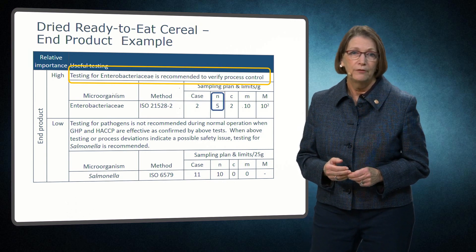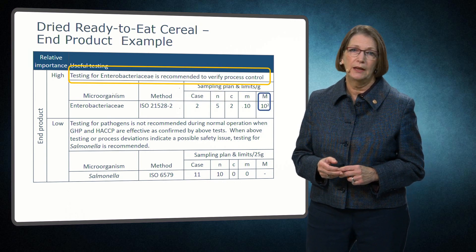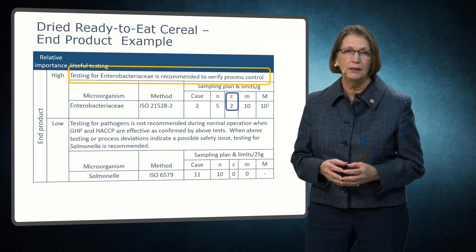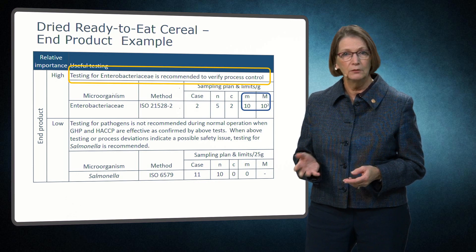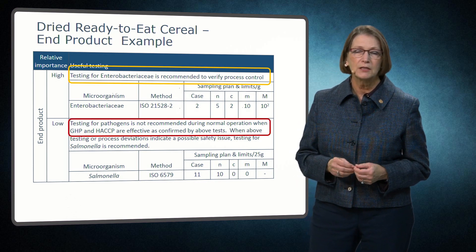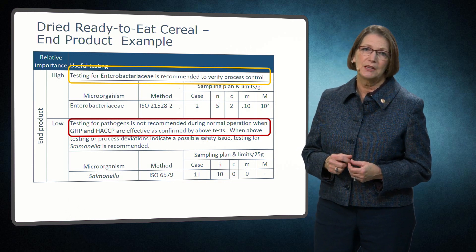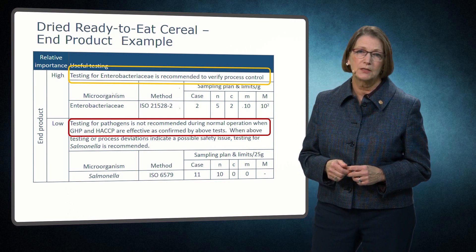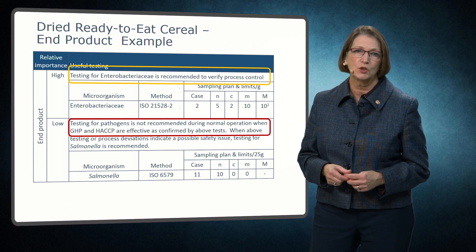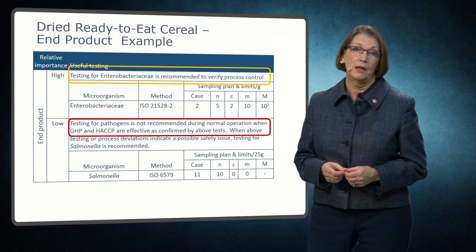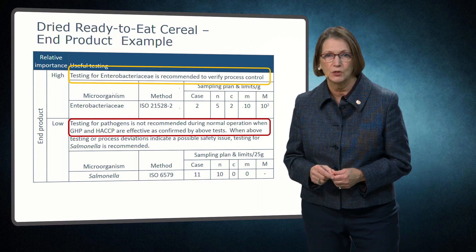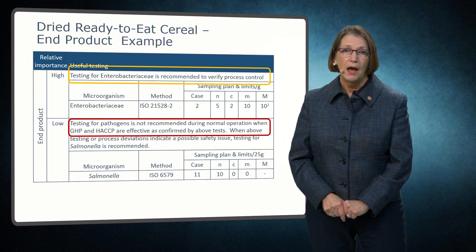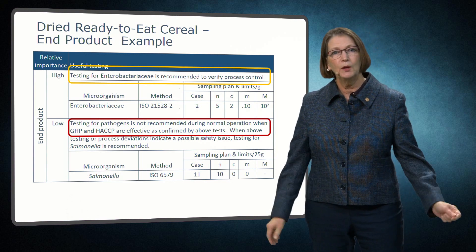In this example, five samples N are tested. No result can exceed 100 per gram, or big M. If more than two of the samples C had Enterobacteriaceae counts between 10 little m and 100 big M, the lot is also unacceptable. Note that testing for pathogens is recommended during normal operation when effective good hygienic practices and HACCP are confirmed by tests recommended on this and the previous slide. However, if other testing indicates a potential safety issue, then within-lot testing for salmonella is recommended. Of course, at port of entry or for incoming ingredients, this sampling would apply.